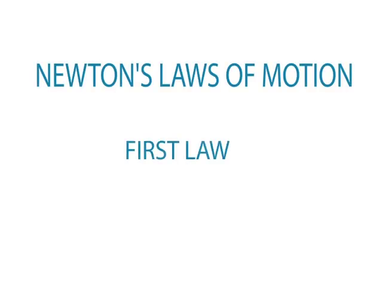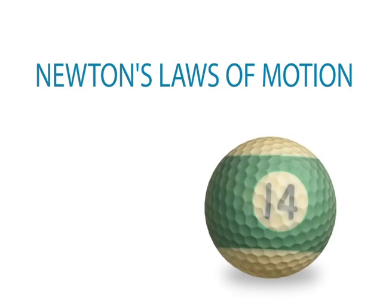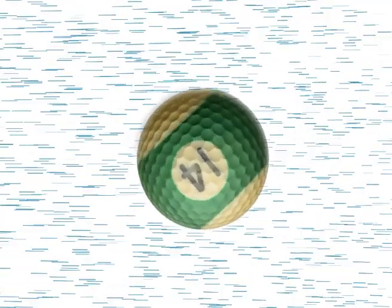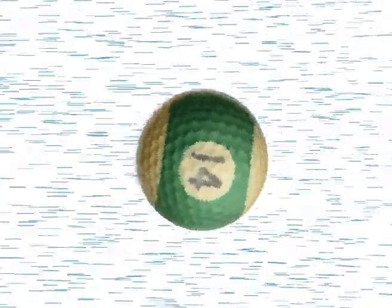Newton's laws of motion. First law: if an object experiences no net force, then its velocity is constant. The object is either at rest if its velocity is zero, or it moves in a straight line with constant speed if its velocity is non-zero.